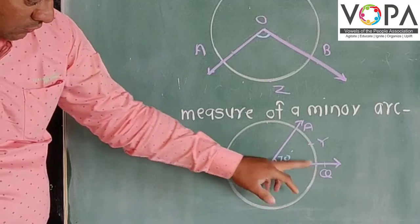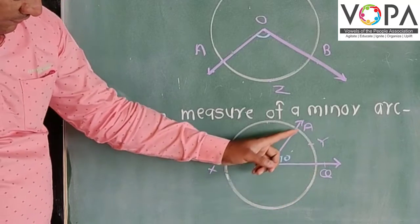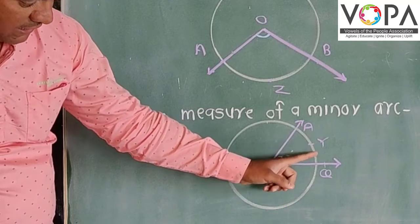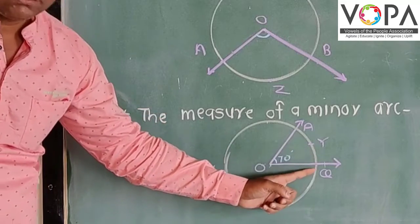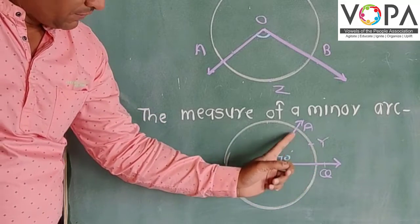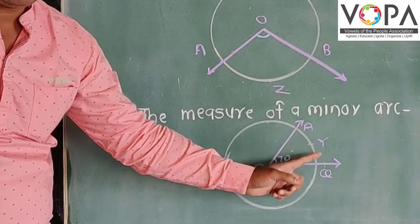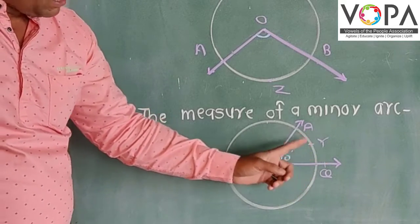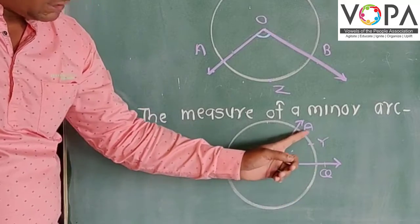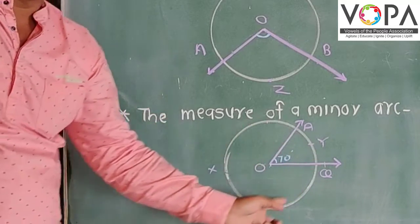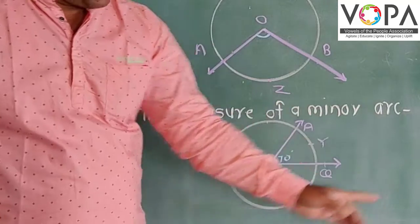Arc AOB. In this case arc AYB. What do you mean by arc there? On a circumference, this distance that AYB is called as an arc and the length of this arc is smaller as compared with this arc. That is why it is called as a minor arc.